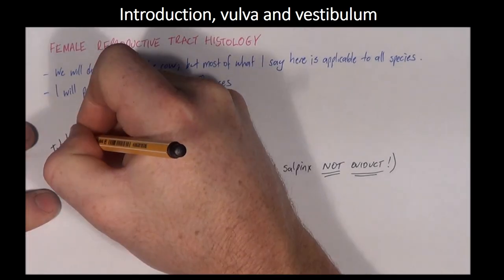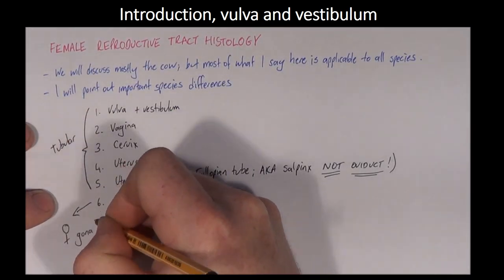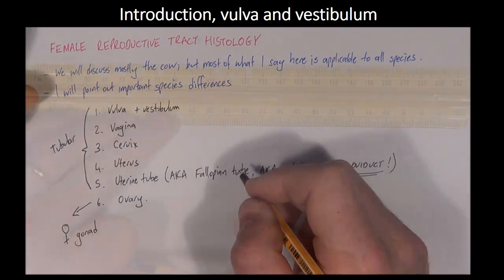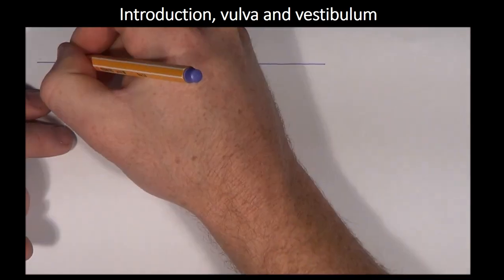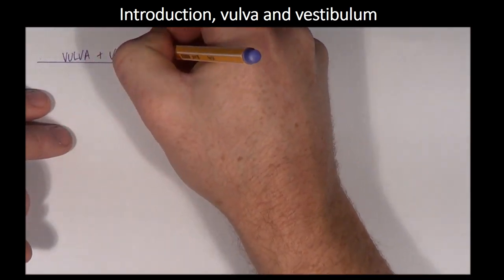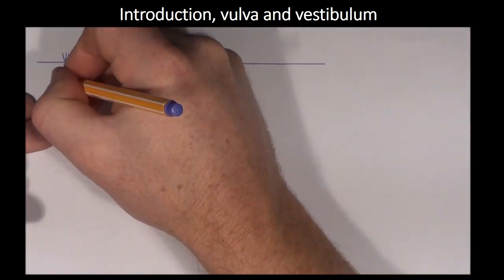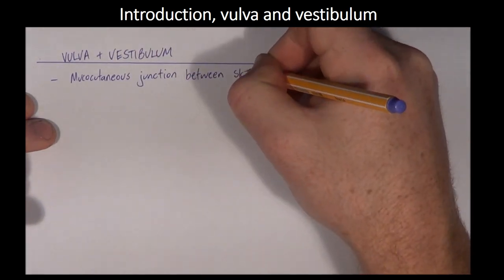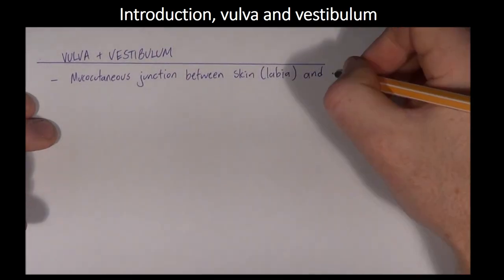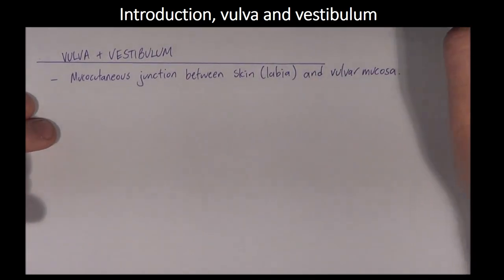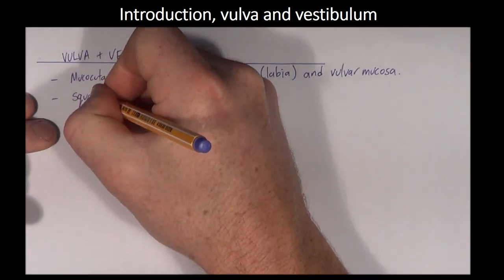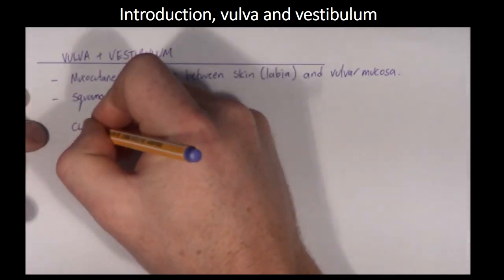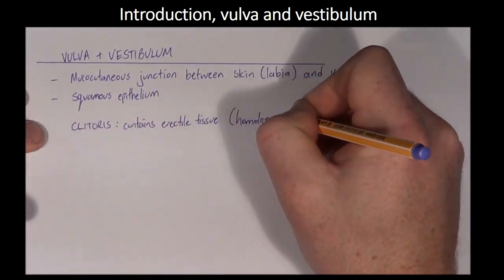The vulva and the vestibulum are the point at which the internal reproductive tract joins the external environment. They are developed from the embryonic urogenital sinus. Just like the penis, the clitoris contains erectile tissue, but the presence of a clitoral corpus spongiosum is the topic of some uncertainty.